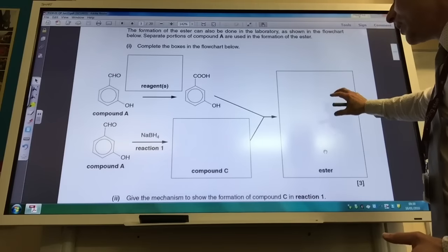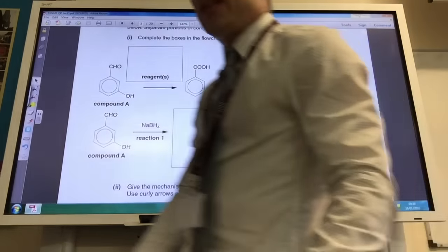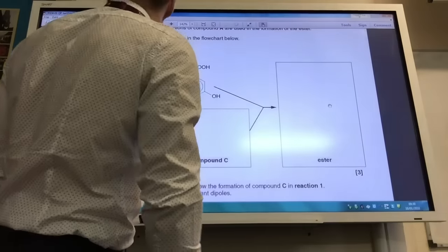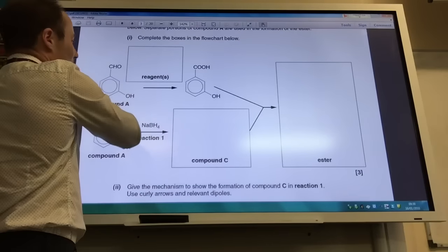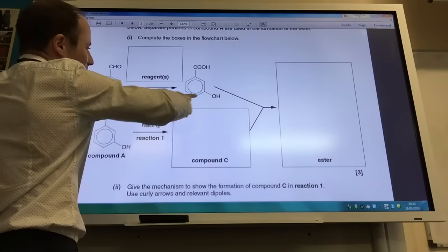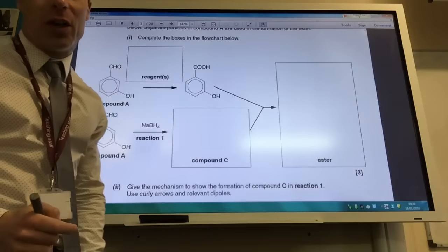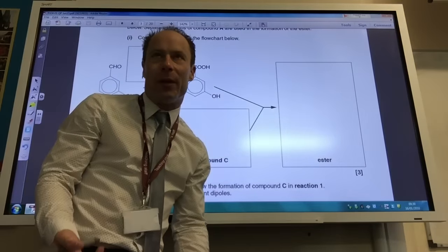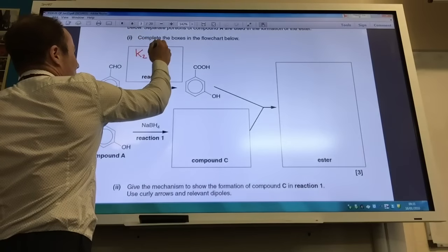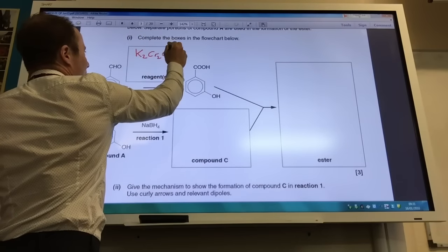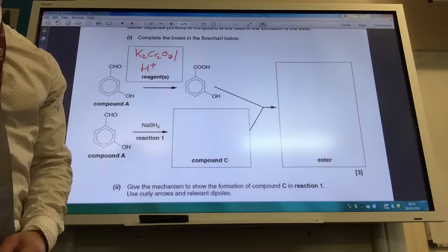So it's time to do some synthesis now. Let's have a look and see what changes we're actually making. For this one, the alcohol or phenol group hasn't changed, but the aldehyde has become a carboxylic acid. So think in your mind, what makes an aldehyde become a carboxylic acid? It is of course potassium dichromate, K2Cr2O7, and remember it needs to be acidified to get that one to work.